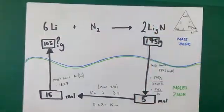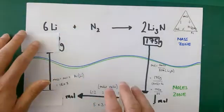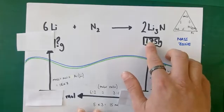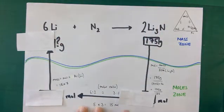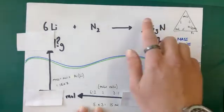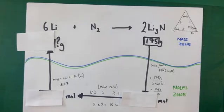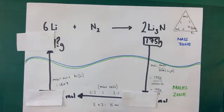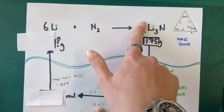Here I'm working backwards — from lithium nitride back to lithium. If I've made 175 grams of lithium nitride, how much lithium was required? It's exactly the same process. Going from the mass zone to the moles zone, I ignore the integers in front until I'm in the moles zone. So: 175 grams of lithium nitride.